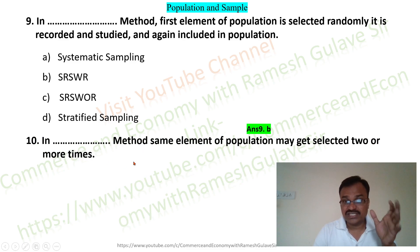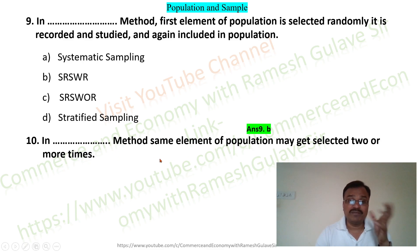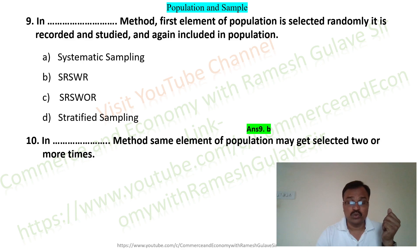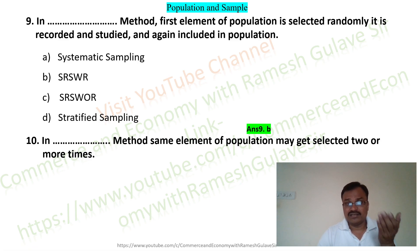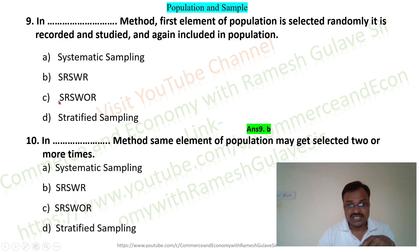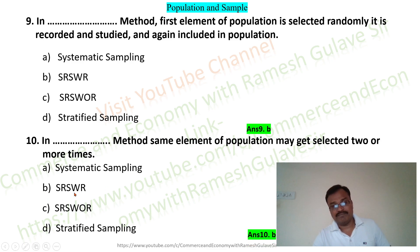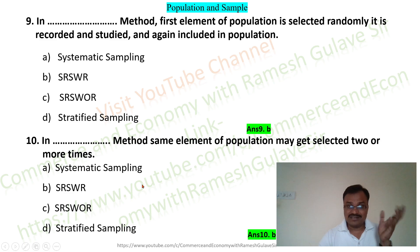The next question says: in dash method, the same element of population may get selected two or more times. In simple random sampling with replacement, after an item is studied and recorded, it is included back in the population, so there is a chance that the same item can be selected again. Option B, simple random sampling with replacement, is the right answer.